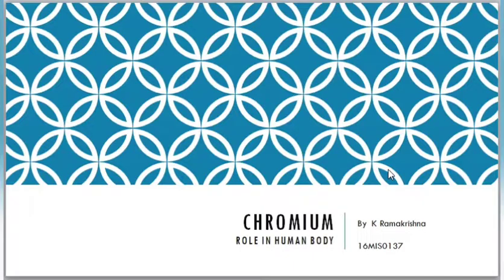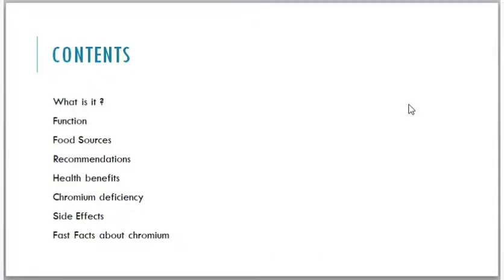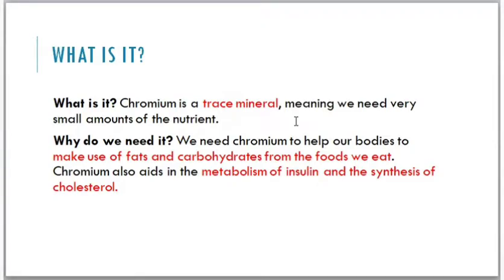Hi everyone. My name is Ramakrishna. In this video, I am going to talk about chromium and its role in the human body. The contents include: what is chromium and its functions, food sources and recommendations, health benefits, chromium deficiency and its side effects, and some fast facts. Chromium is an essential mineral not made by the body; it must be obtained from the diet. There are approximately 4 to 6 mg of chromium stores in our body, found in kidneys, liver, muscles, heart, and bones.